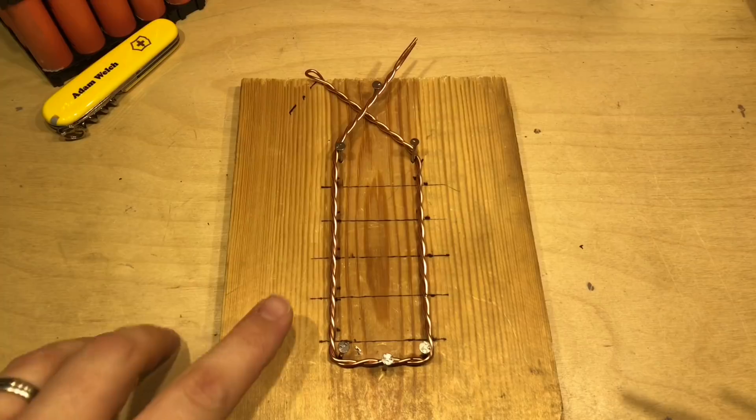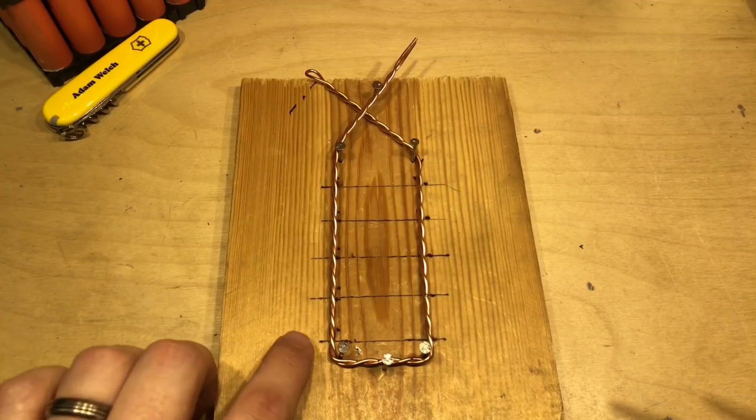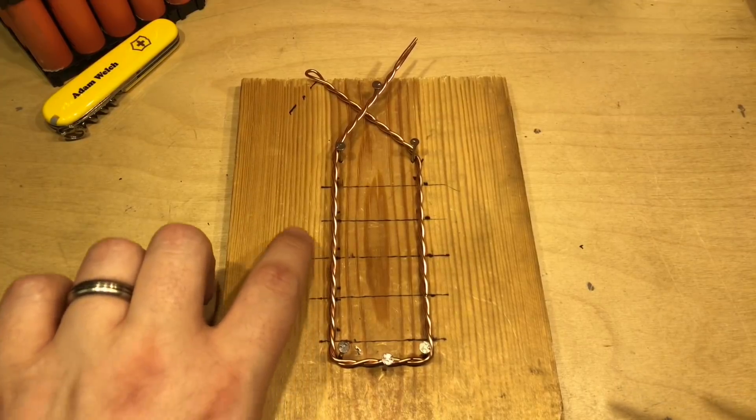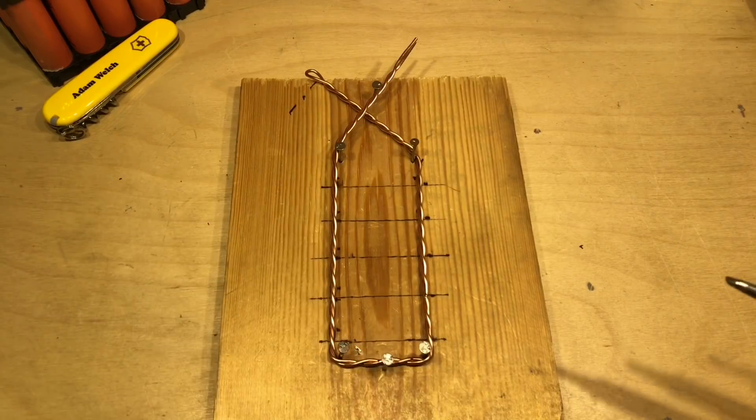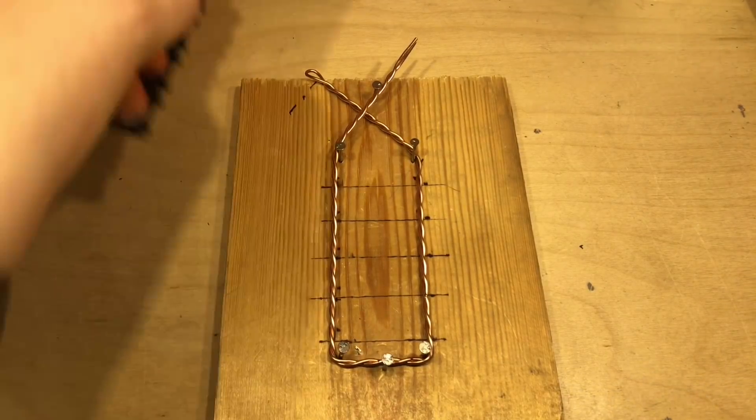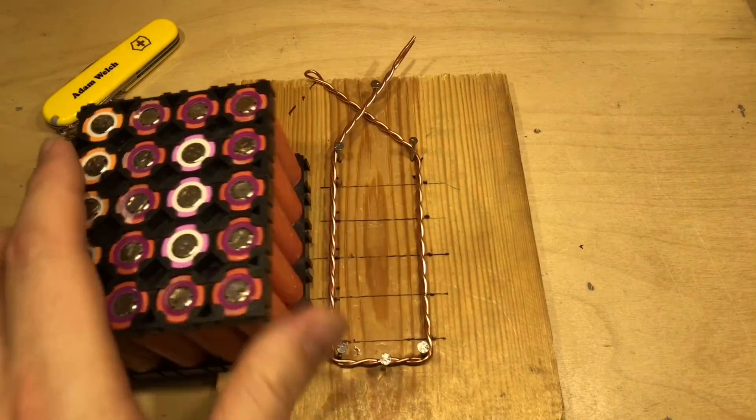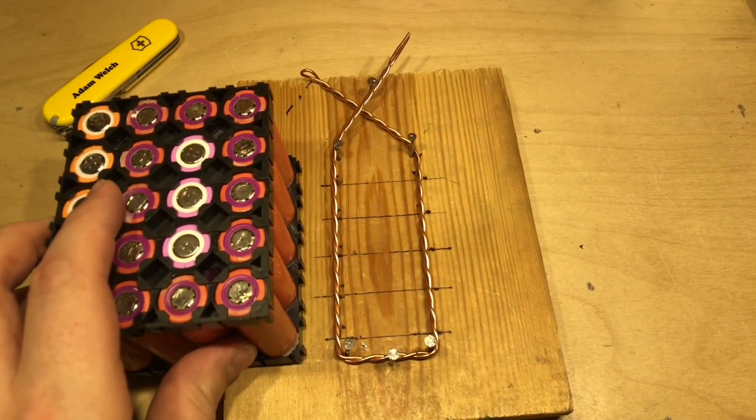Right now with the copper bus bar in place, as you can see I've drawn these lines across this jig as well and they should roughly line up with the centre of each cell there.